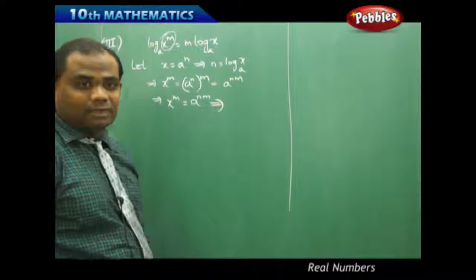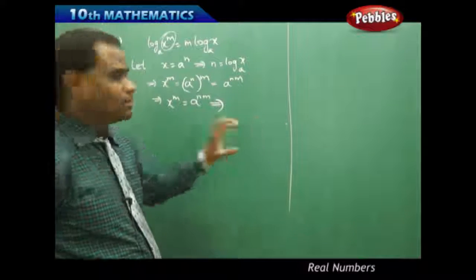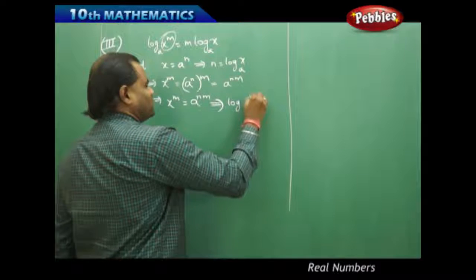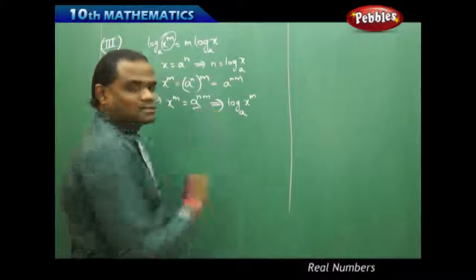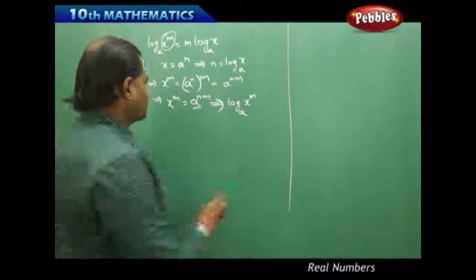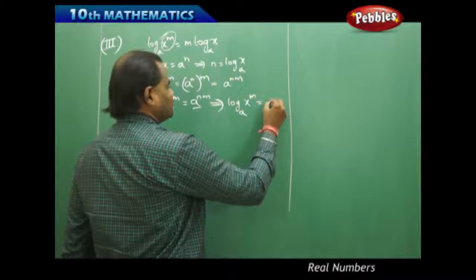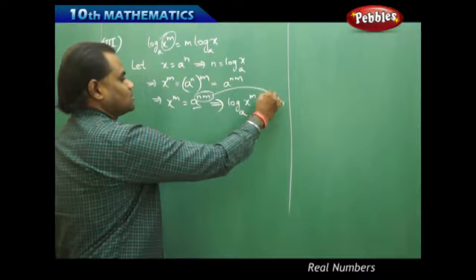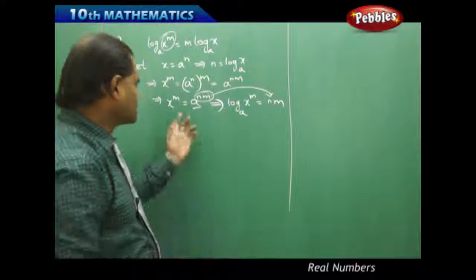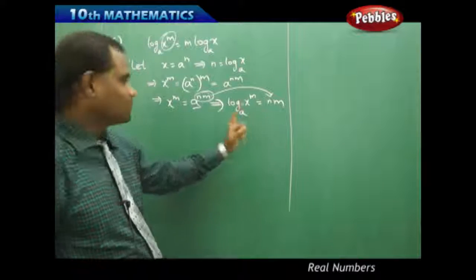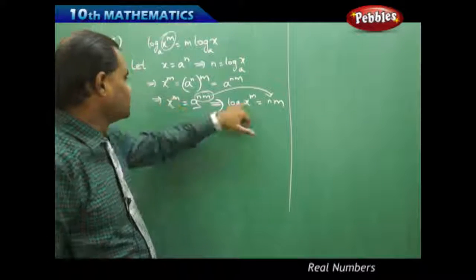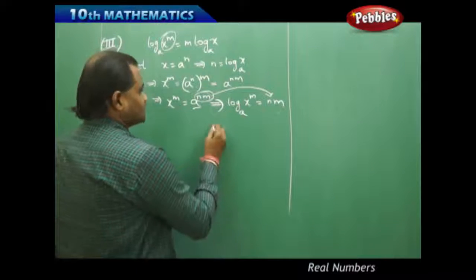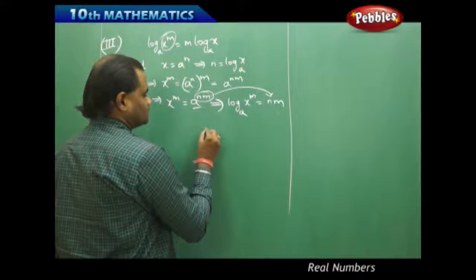That implies finally I get x to the power m equals a to the power nm. So when I convert this exponential to logarithmic form, using the rule a equals b to the power c, log x^m to base a equals nm. This forms on the right hand side, so the exponent converts to the logarithmic equation as log x^m to the base a equals nm.